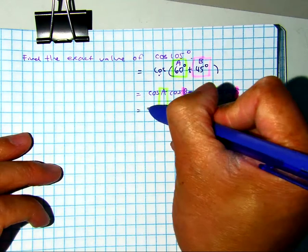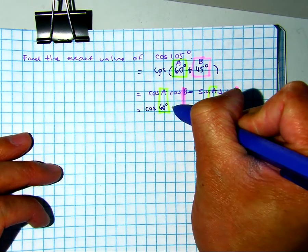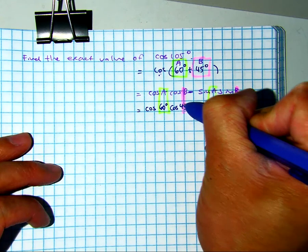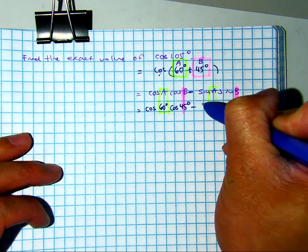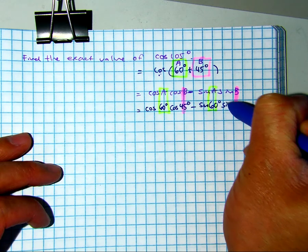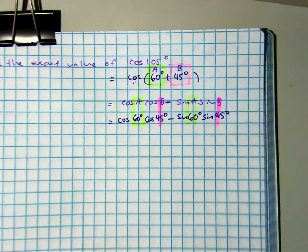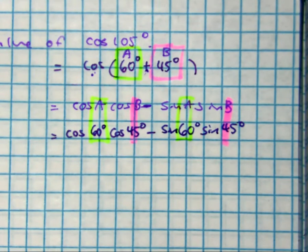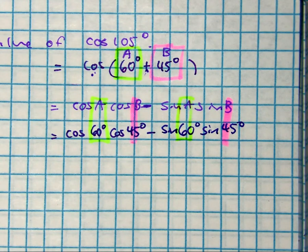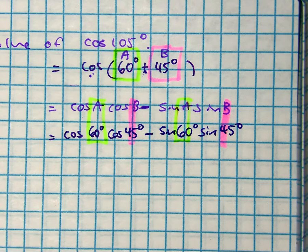So I have cosine of 60, cosine of 45, minus sine of 60, and then sine of 45 degrees.